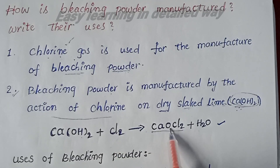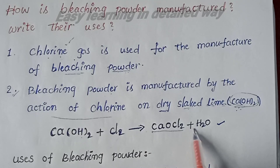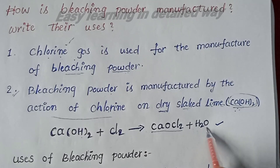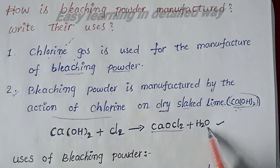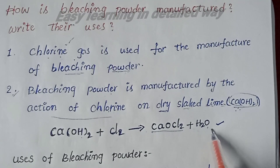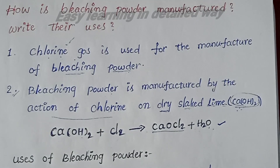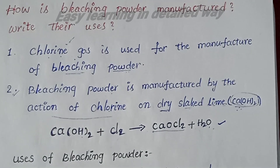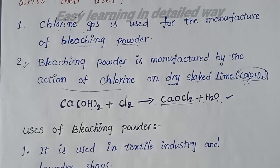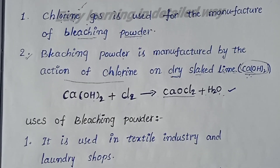The products are CaOCl₂ and water. This is the equation for the preparation of bleaching powder. Now, let's see the uses of bleaching powder.